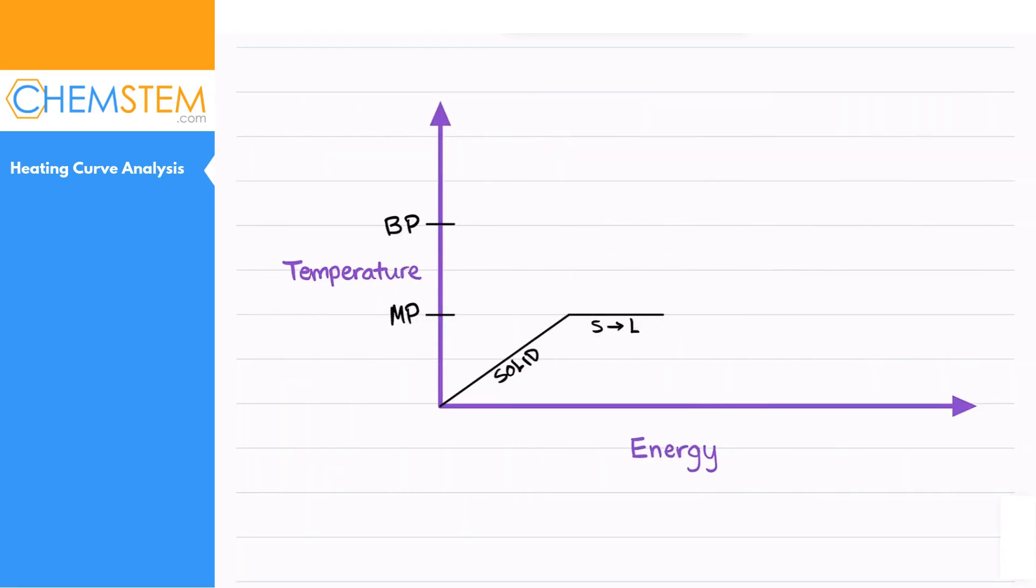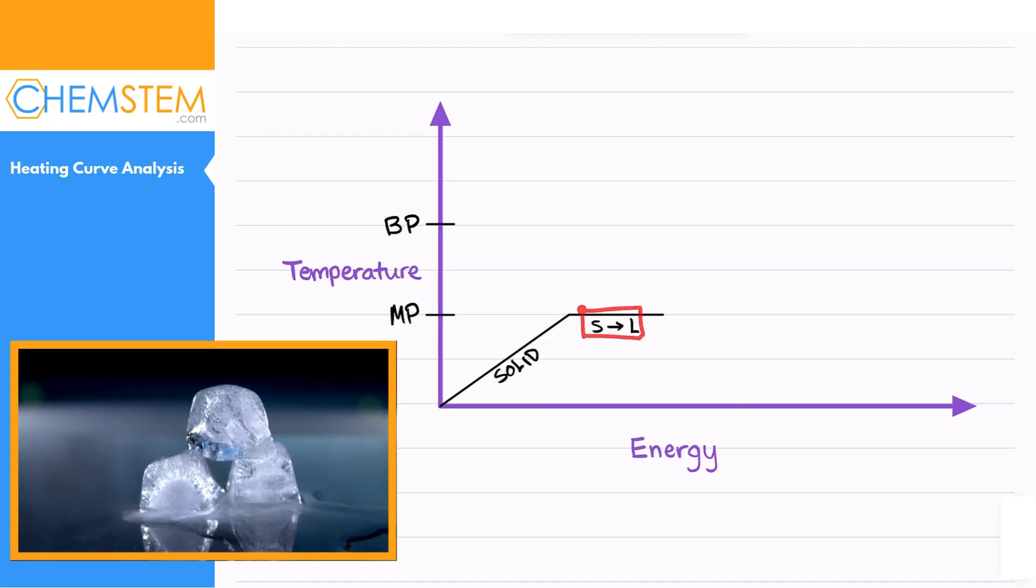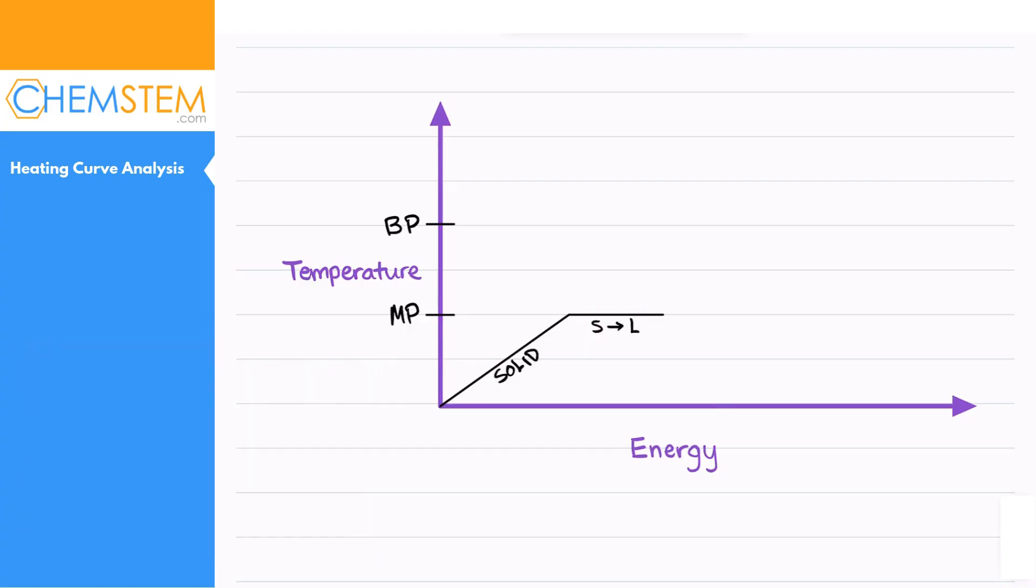As you add more energy it's actually going into weakening and breaking some of those intermolecular forces. So as a substance changes from solid to liquid, it's not going to increase its temperature. It's going to stay at that melting point until all the solid is gone. We call this phase change fusion, which is usually abbreviated as just FUS. So that's the solid to liquid transition.